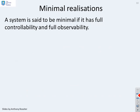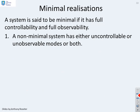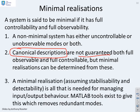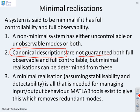Regarding minimal realizations: a system is said to be minimal if it has full controllability and full observability. A non-minimal system will have either or both uncontrollable and unobservable modes. Canonical descriptions — such as controller canonical form and observer canonical form — are not guaranteed to be fully observable and fully controllable. A minimal realization, which assumes stabilizability and detectability, is all that is needed for managing input-output behaviour. If you have a non-minimal form, there are MATLAB tools that allow you to convert it to a minimal form.